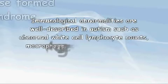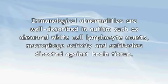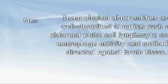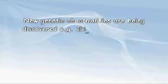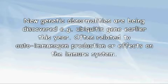Immunological abnormalities are well described in autism, such as abnormal white cell lymphocyte counts, macrophage activity, and antibodies directed against brain tissue. New genetic abnormalities are being discovered, for example the abnormal ubiquitin gene earlier this year. The genetic abnormalities are often related to abnormal autoimmunogen production or immune system abnormalities.